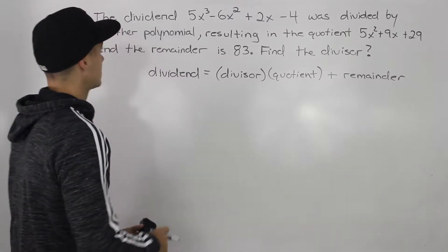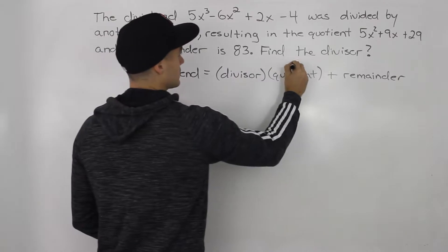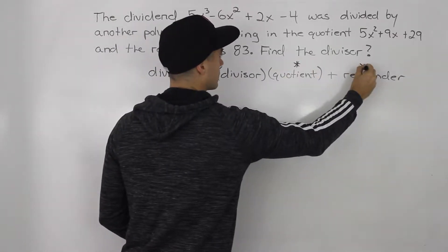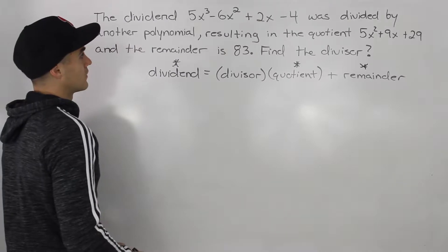But in this case notice we're given the dividend, we are given the quotient, and we are given the remainder. So we're gonna have to solve for this divisor here.